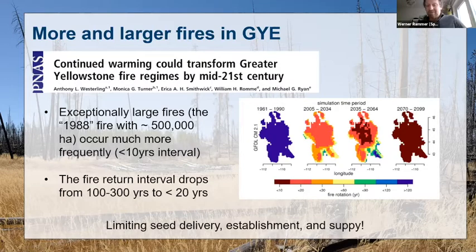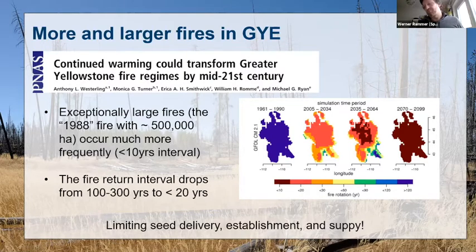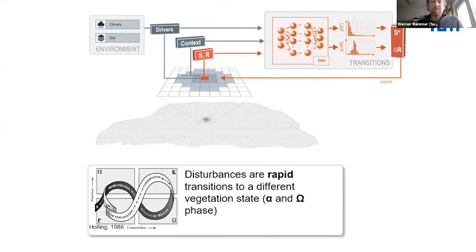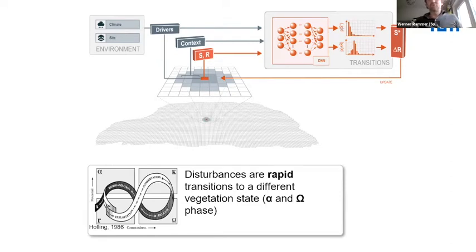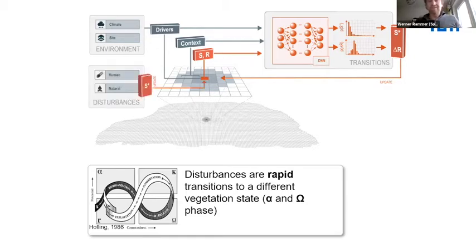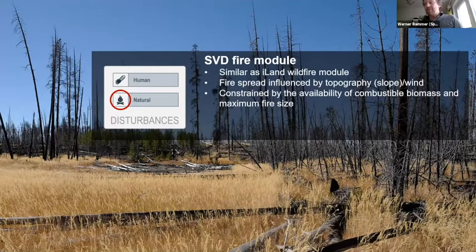This has severe consequences for vegetation, because larger and more frequent fires limit seed delivery, limit establishment after fire, and limit seed supply — trees are not able to grow to seed-producing age anymore, and distances to seed sources become too large. It is straightforward to include disturbance in the SVD system: disturbances are rapid transitions to different vegetation states compared to slower transitions of dynamic vegetation development. We can add a module to SVD that updates states more frequently in case of disturbance.